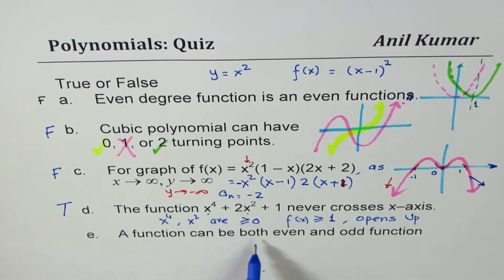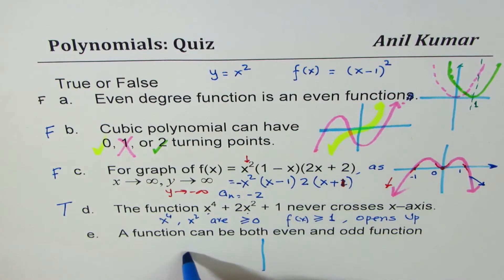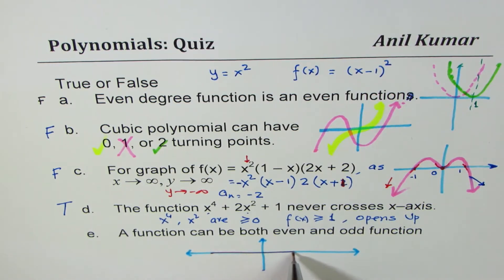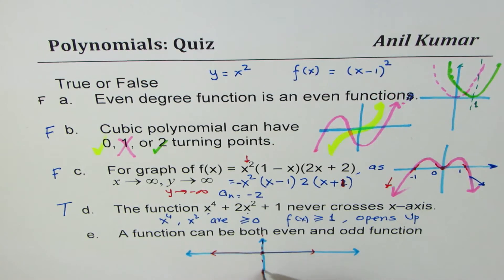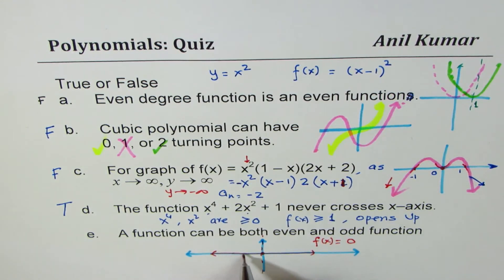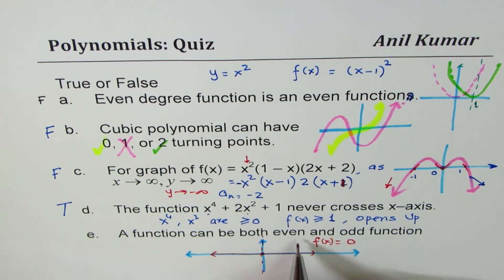Statement E: a function can be both even and odd. This is true, and it appears in many test papers. One example is the function f(x) = 0 — the x-axis itself. It is symmetric about the origin (odd) and also symmetric about the y-axis (even). The domain is all real numbers. So f(x) = 0 is a valid example of a function that is both even and odd. This statement is true.